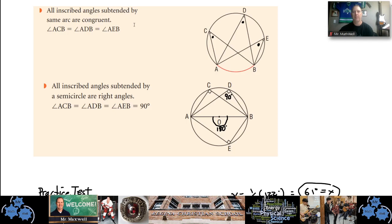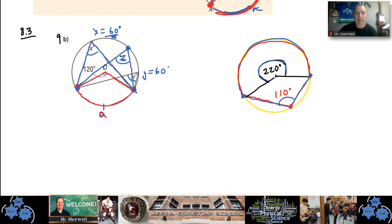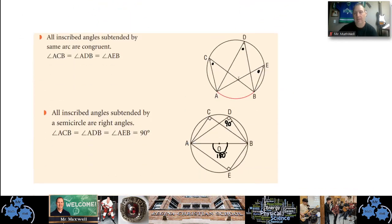All inscribed angles subtended by the same arc are congruent. We saw that with x, y, and z — they were all inscribed and all equal to 60 degrees. So for any given arc, every inscribed angle subtending it will have the same measure.